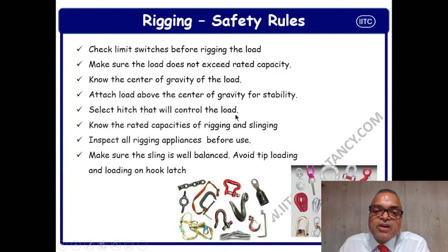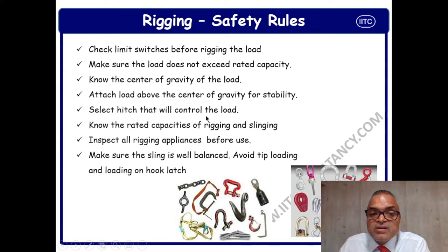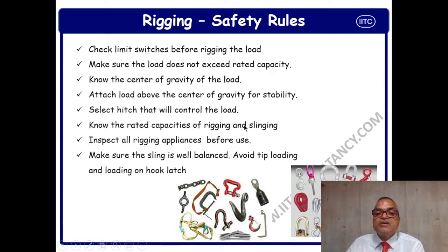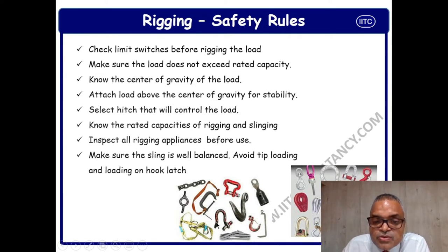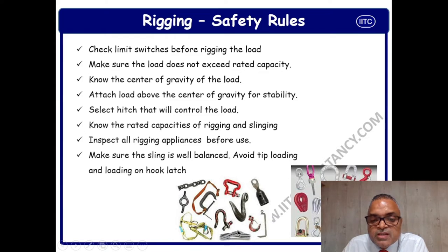Select the hitch that will control the load — we have to select the right hitch which will control the load. Know the rated capacity of the rigging and slinging. We must know the load weight and the capacity of rigging and slinging; if we are not using the right rigging or slinging, it will probably break when the load is being lifted. Inspect all rigging appliances before use. This type of hook — without a latch, a broken chain, anti-cycle damage, fabric rope damage, wire rope damage — should not be used at any cost.